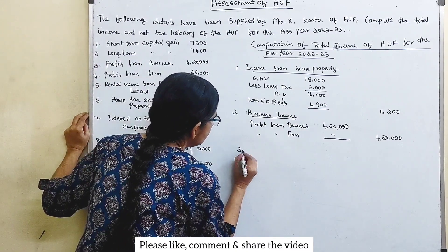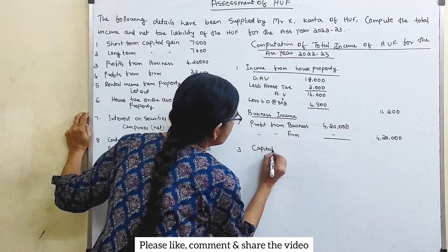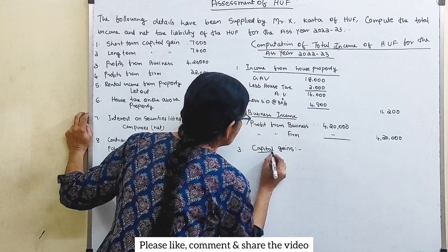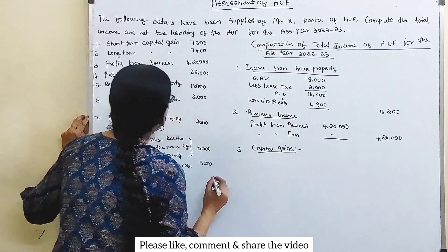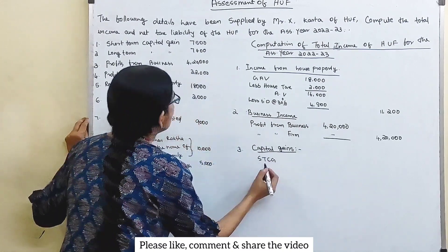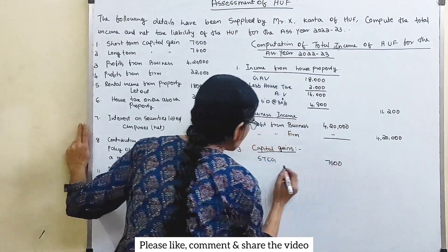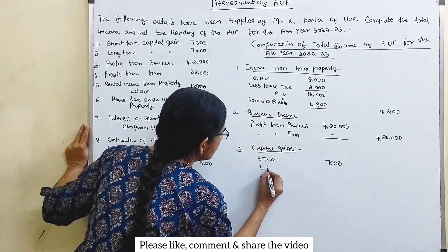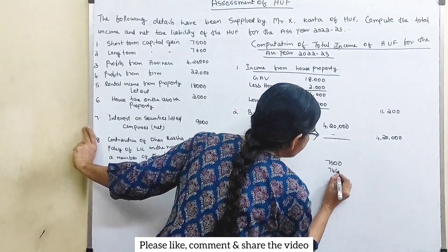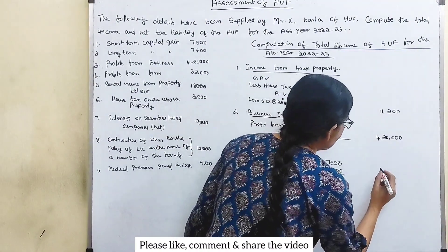Capital gains. Short-term capital gain is 7,500. Long-term capital gain is 7,400. Total capital gains: 14,900.